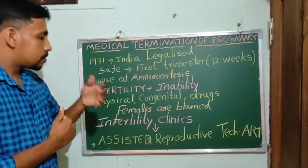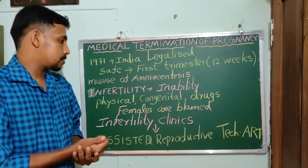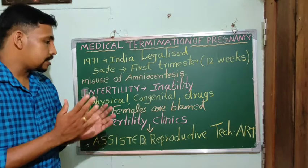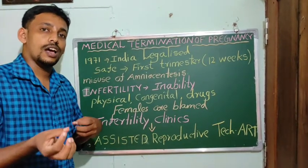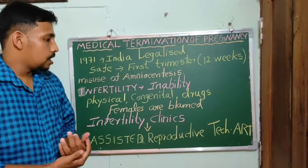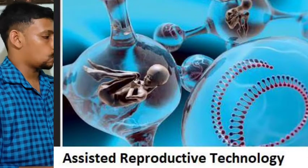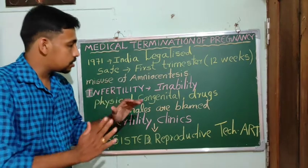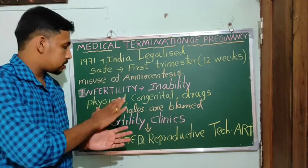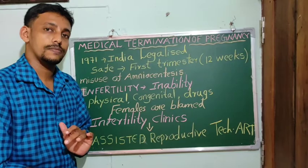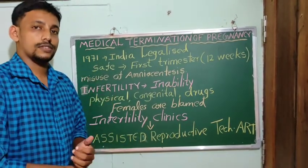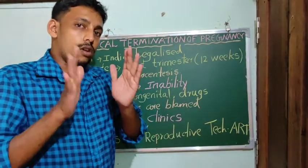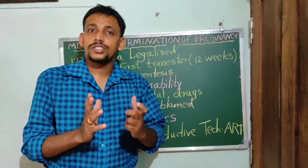In some cases, corrections may not be possible. At that point, couples have to seek highly specialized techniques known as Assisted Reproductive Techniques, or ART. Most problems can be treated at infertility clinics, but when corrections are not possible, the couple can adopt special techniques — commonly known as ART.